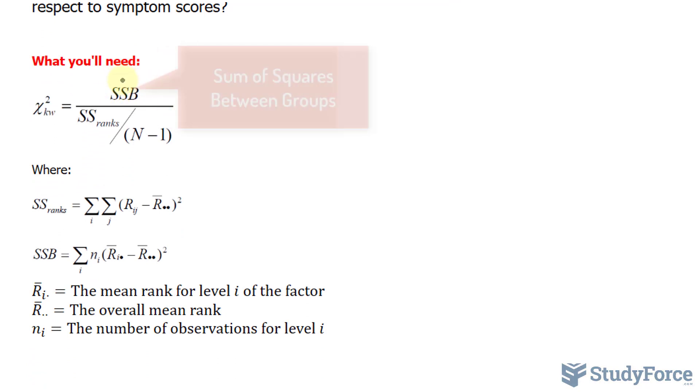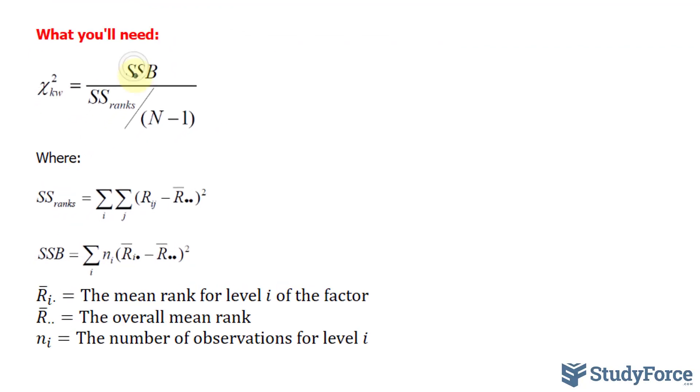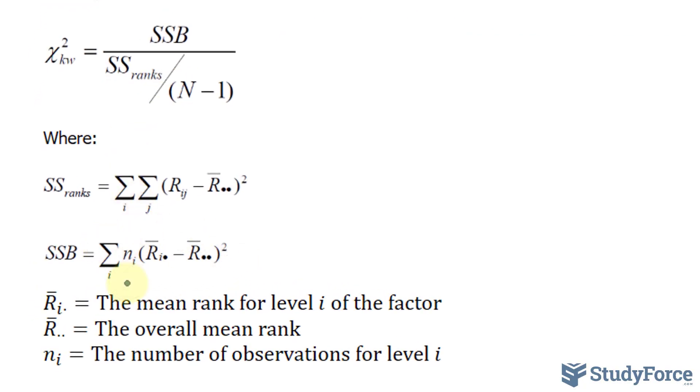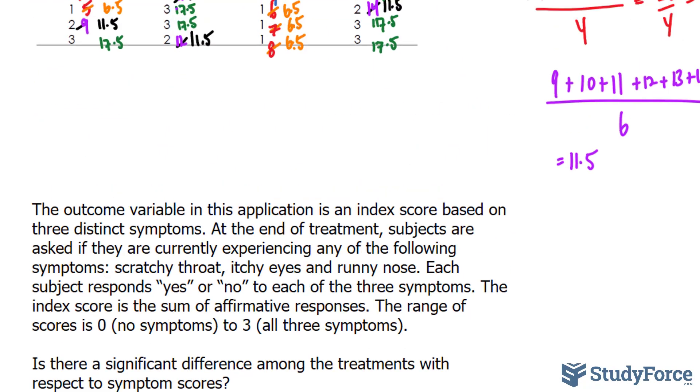The top part is the sum of squares. The top variable is calculated using this formula, and this formula contains n, which is the total number of observations for any particular level. That represents the mean for each of the treatments, and that represents the total mean. We need to calculate those.